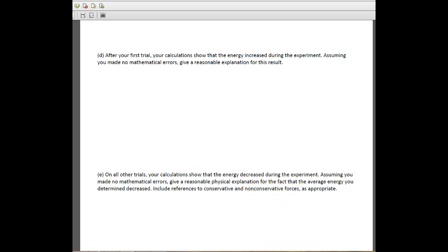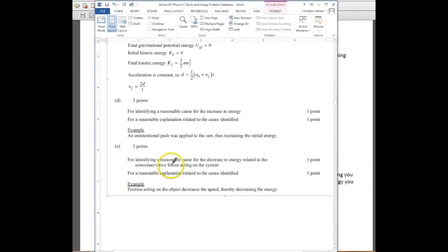So let's take a look at what they suggest here for identifying a reasonable cause and then give it an explanation. So friction on the object decreases speed, thereby decreasing the energy. I would probably add to that it is a non-conservative force. So you do, you kind of have to follow what they ask. So this would be non-conservative.